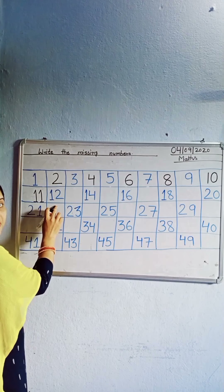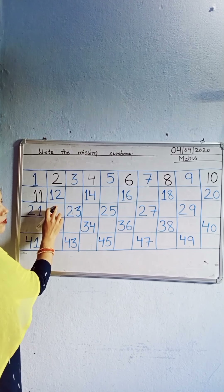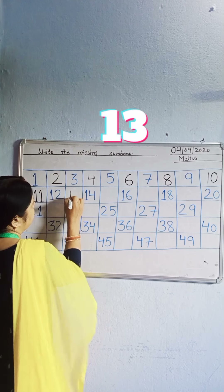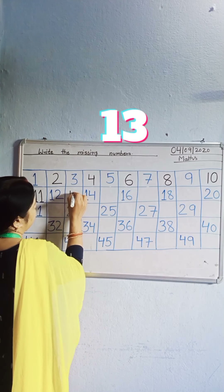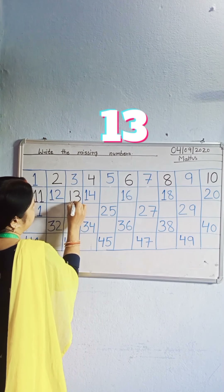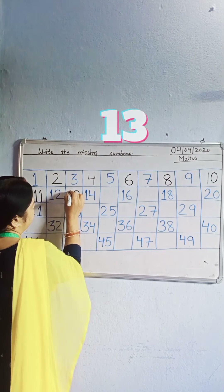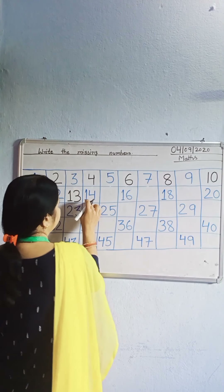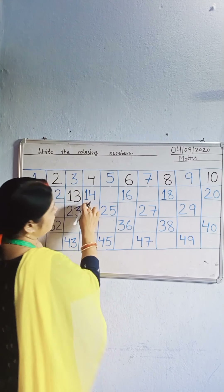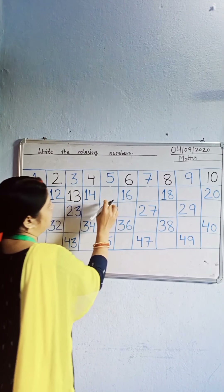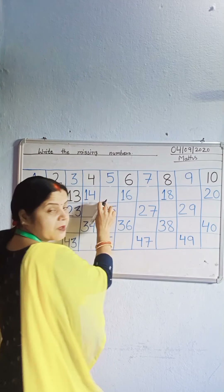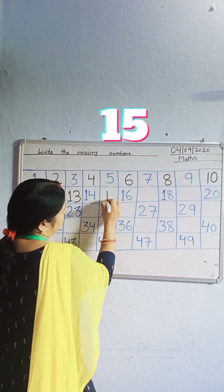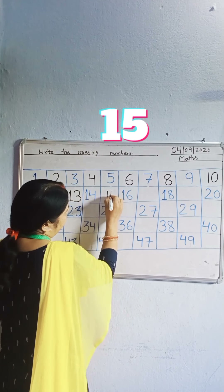Next, which number? 12. Which number is missing? 13. Write down 13. Which number? 14. Which number is missing? 15. Write down 15.